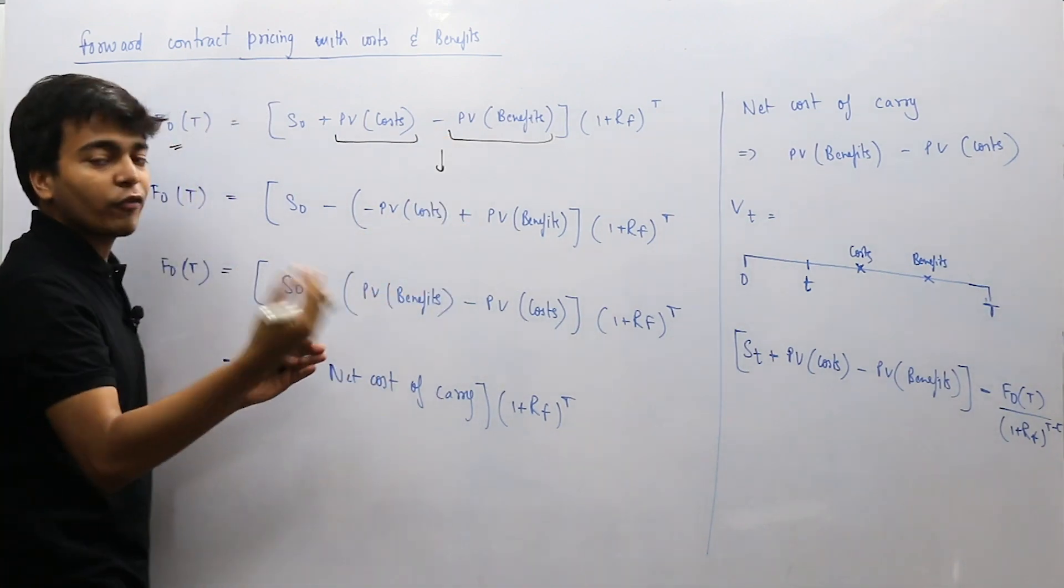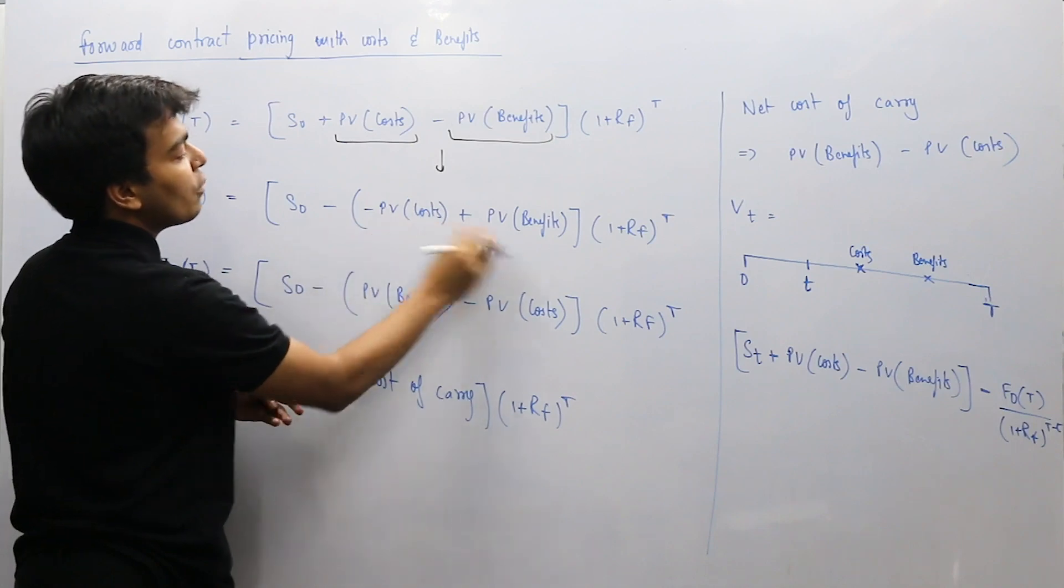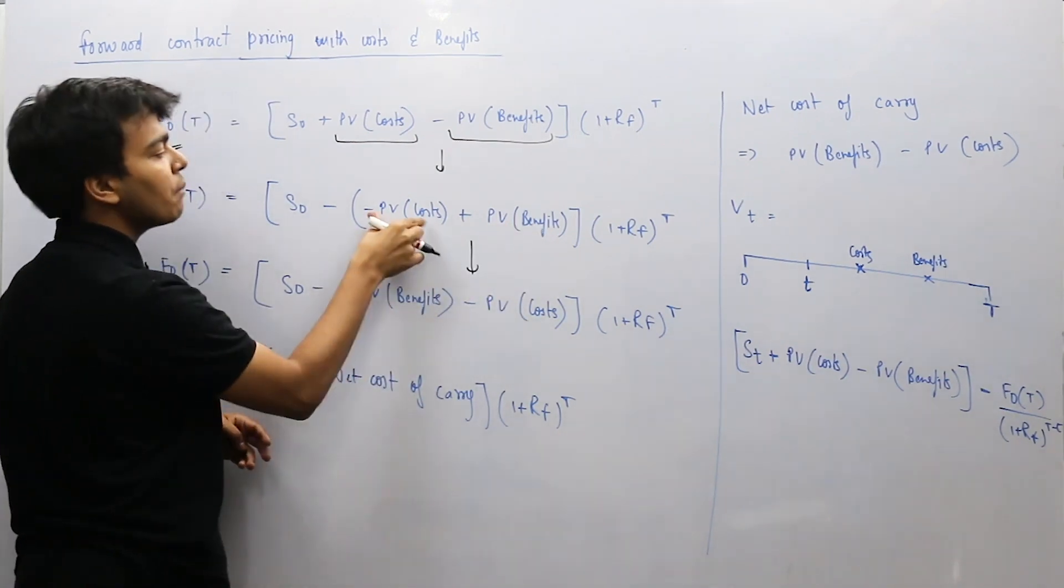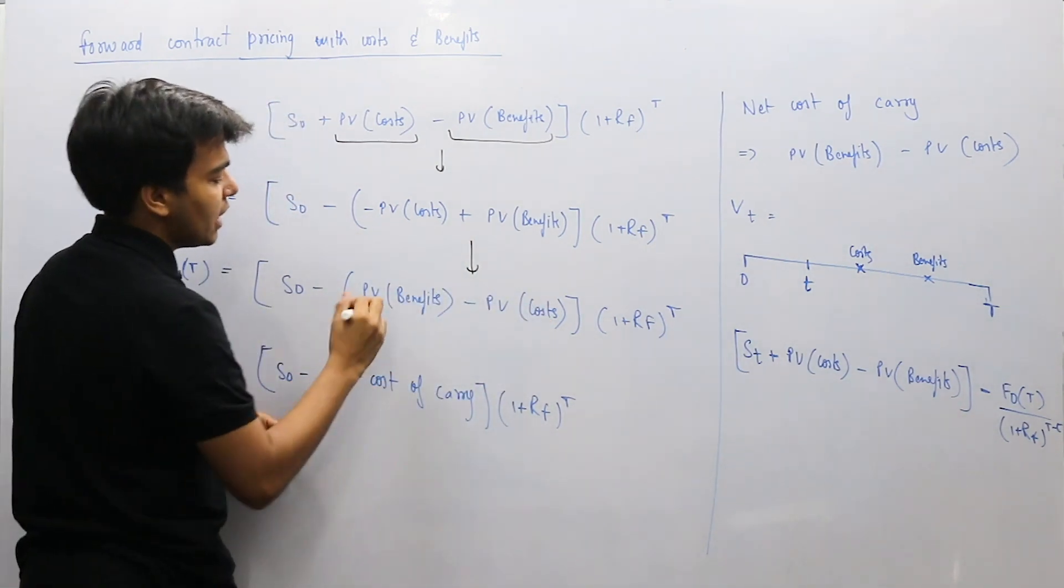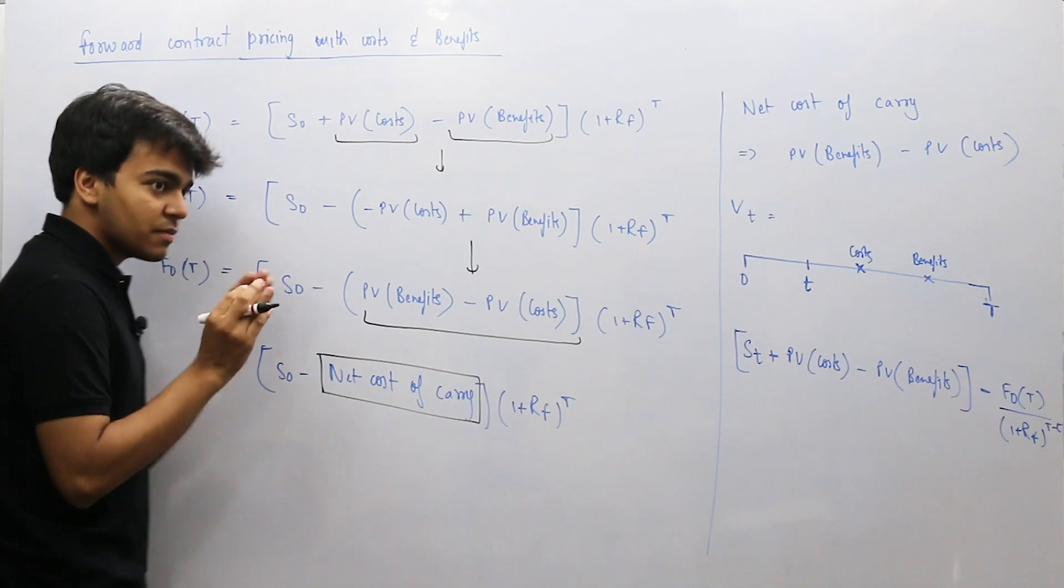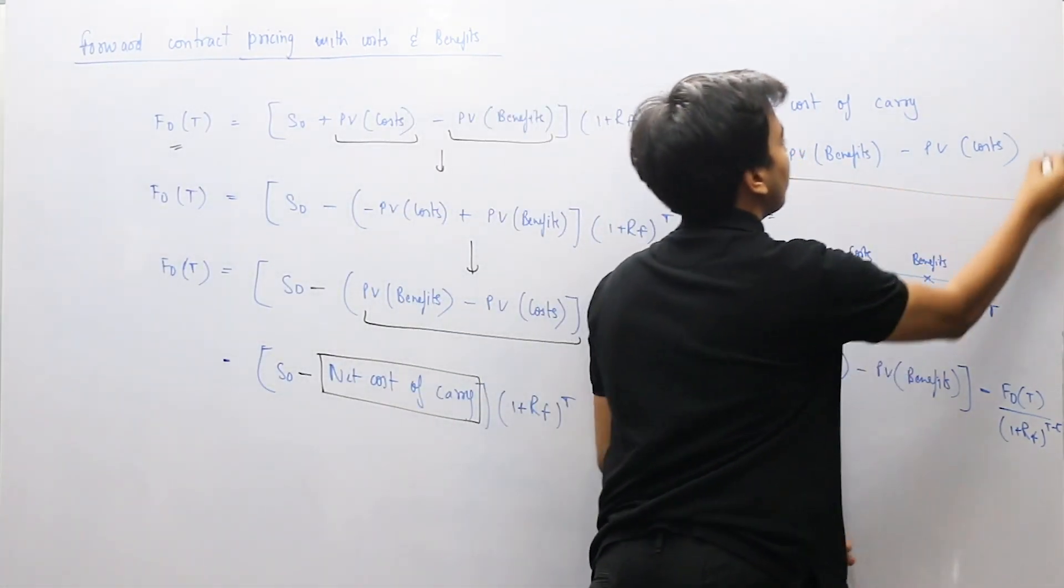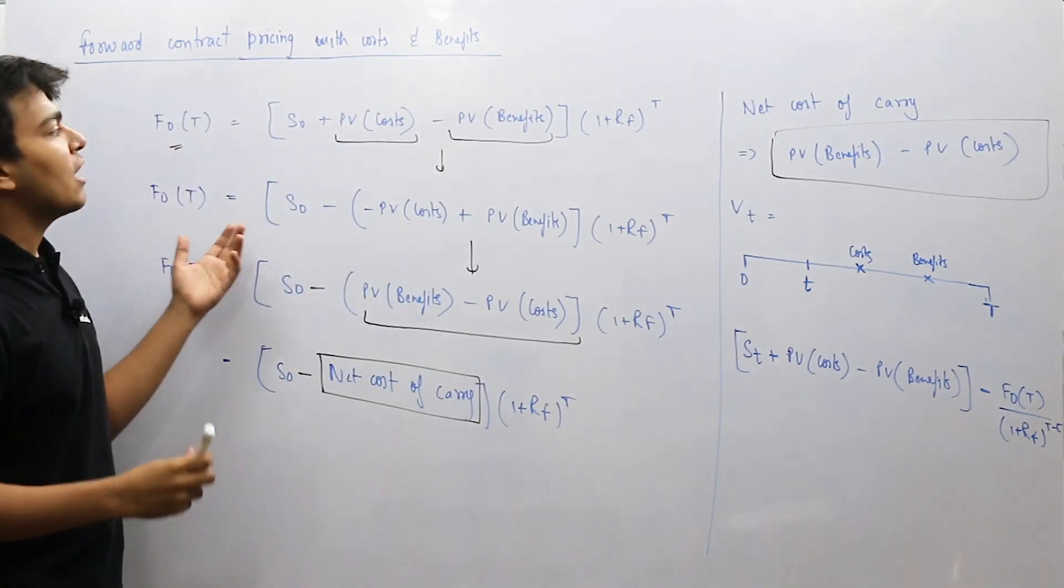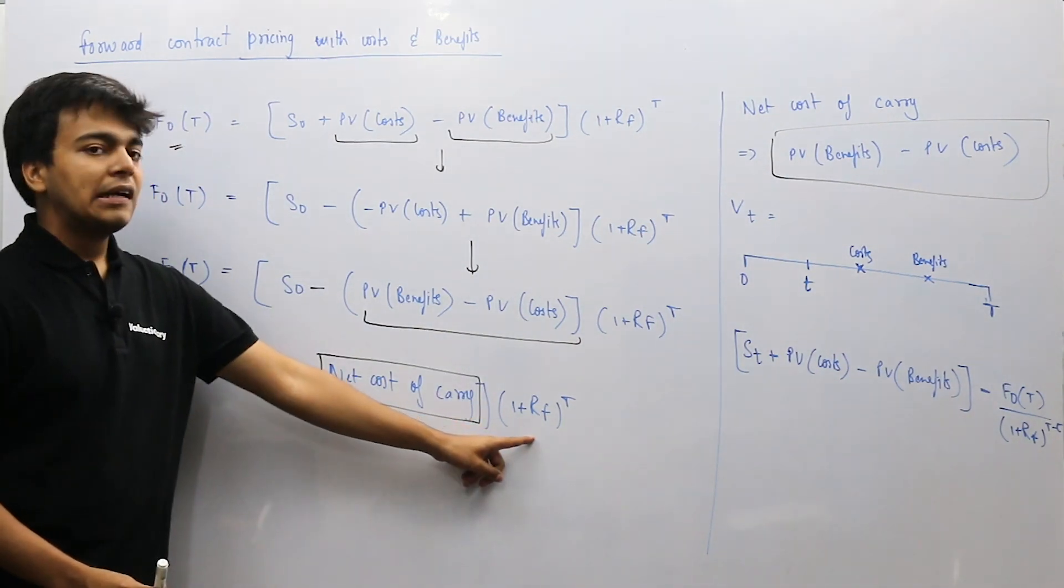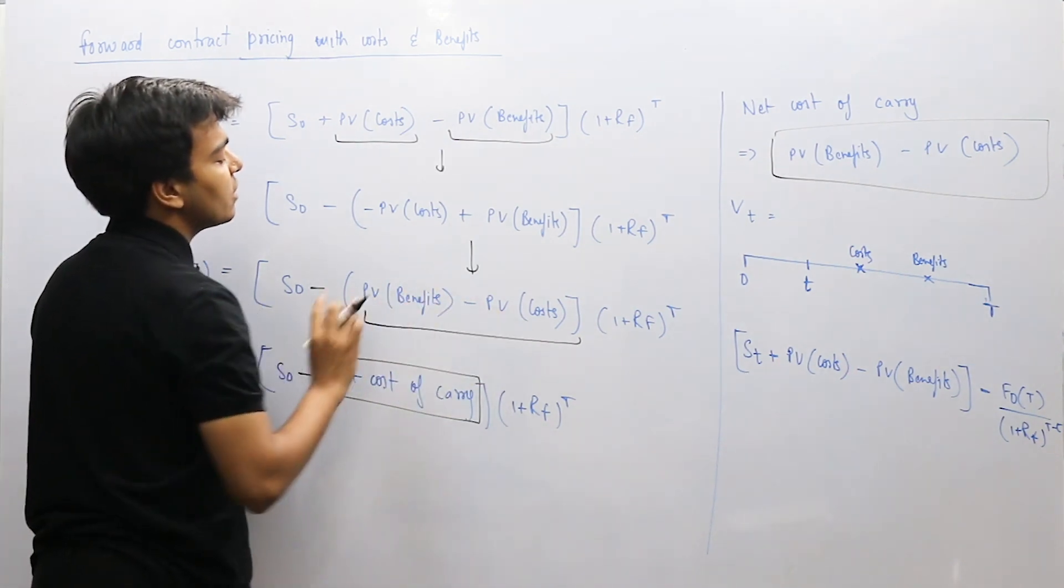Alright, and here we have minus plus. When you take negative common outside the bracket, so I have only minus present value of cost plus present value of benefits. This present value of benefits minus present value of cost we call net cost of carry. We call present value of benefits minus present value of cost net cost of carry, which is nothing but your present value of benefits minus present value of cost.